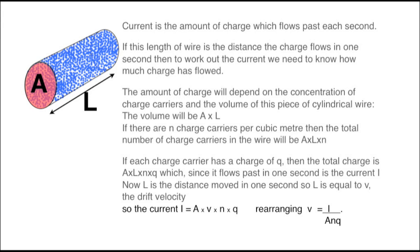Rearranging to make V the subject of the equation gives V equals I divided by ANQ. We will use this now to calculate an example drift velocity.